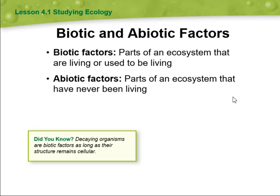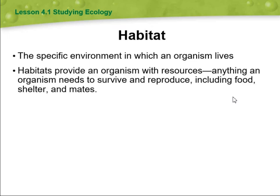Then we are going to differentiate between biotic and abiotic factors. Biotic factors are parts of an ecosystem that are living or used to be living. Abiotic factors are parts of an ecosystem that have never been living. Decaying organisms are biotic factors as long as their structure remains cellular.